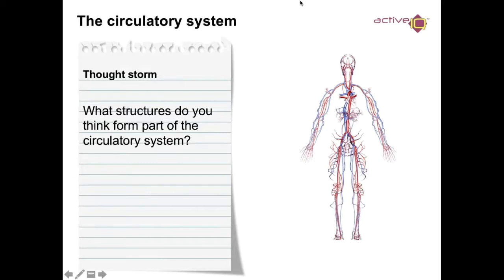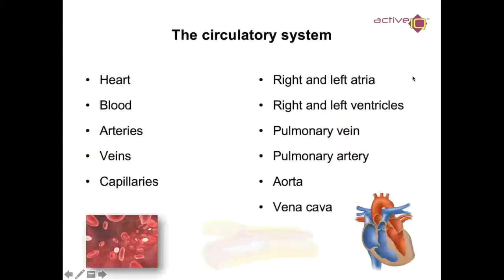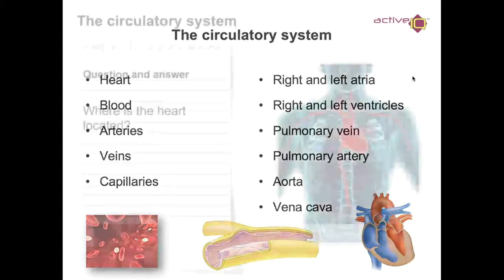So the circulatory system — what structures do you think form part of it? It comprises the heart, blood, arteries, veins, and capillaries. You have a right and left atria, a right and left ventricle, a pulmonary vein, a pulmonary artery, the aorta, and the vena cava.